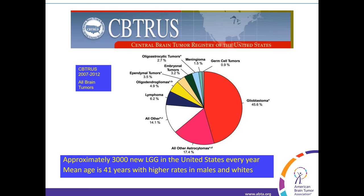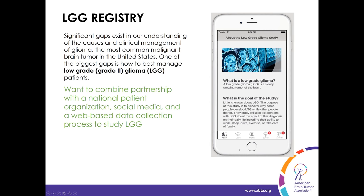In the older WHO classification, included tumors had terms such as astrocytoma, oligoastrocytoma (also called mixed glioma), and oligodendroglioma. The mixed glioma category is no longer used in the new guidelines, but since we hope to incorporate patients diagnosed over a wide range of time, we'll be including all three groups. When we talk about high grade glioma 4, we're including the anaplastic tumors and then glioblastoma.